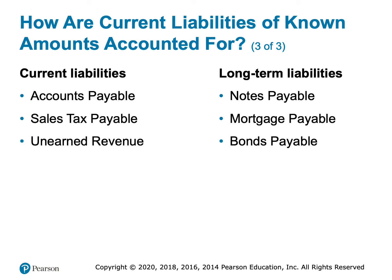Some common current liabilities include accounts payable and unearned revenue — that's when a customer has paid us for a good or service we haven't provided yet, so we have a debt to them. We've also talked about interest payable, salaries payable, wages payable, utilities payable, and sales tax payable. Remember, if we collect sales tax, we don't keep that money — it must be remitted to state and local government. You could also have a short-term note payable due within a year. Notes payable, mortgages, and bonds are generally long-term. We'll cover bonds more in Chapter 12.